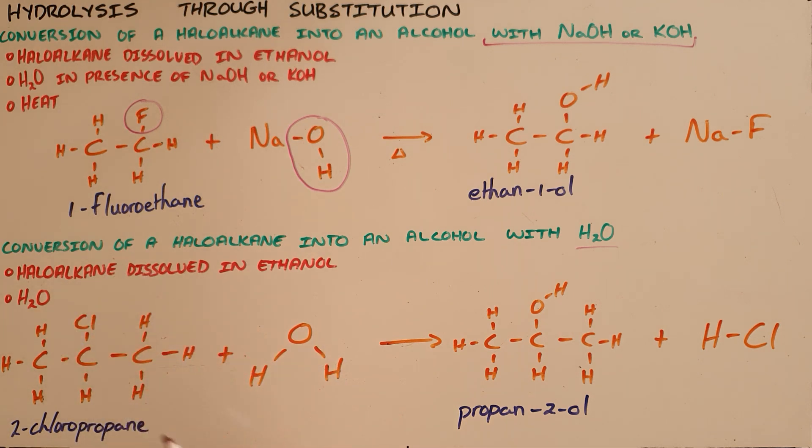When these conditions are met, we find that the chlorine atom is replaced or substituted by the hydroxyl group from the water molecule, which forms the alcohol propan-2-ol and leaves us with HCl.